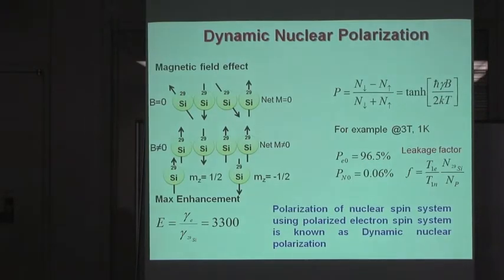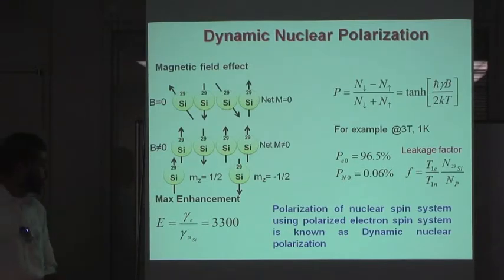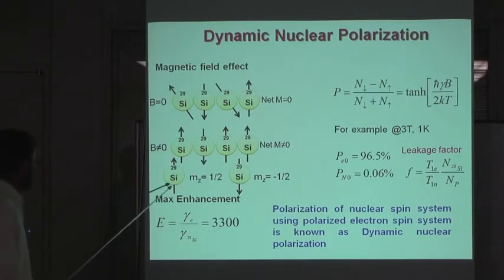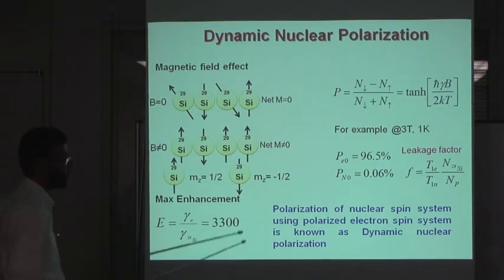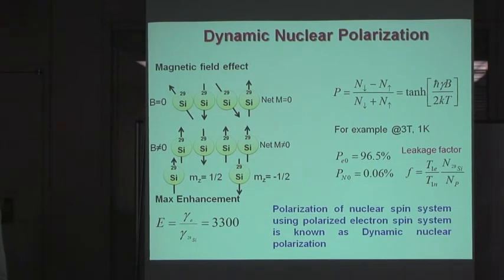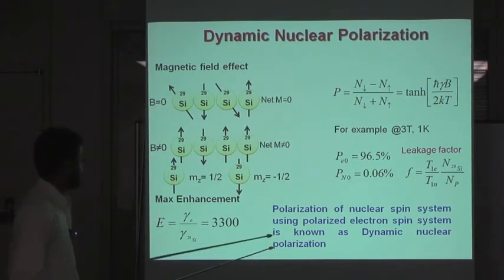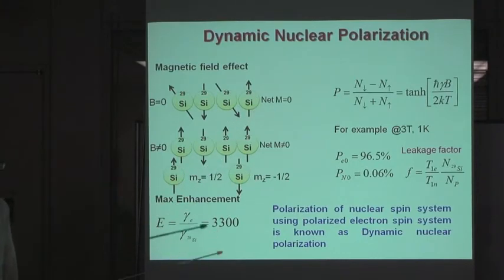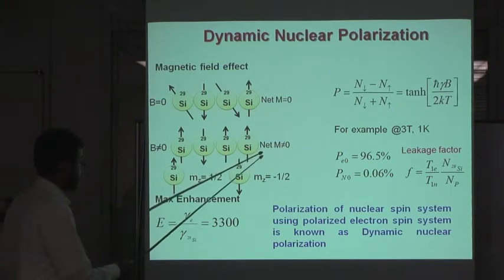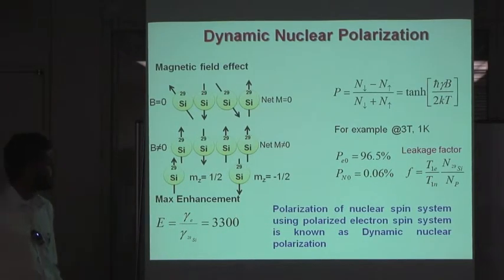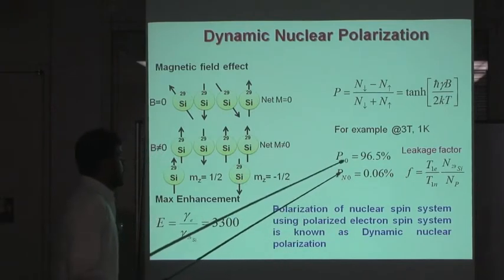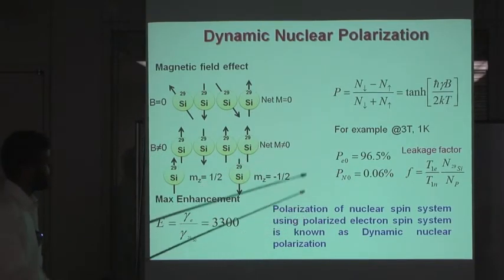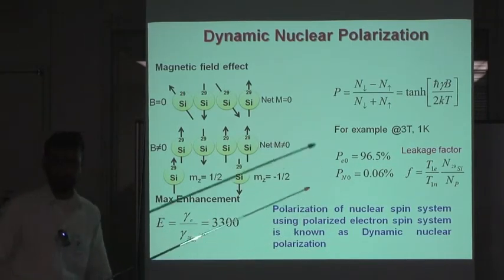Dynamic nuclear polarization. Silicon has three isotopes: 28, 29, and 30. Only 29 has nuclear spin. The 29 silicon up nuclear spin represents the magnetic quantum number plus half and down spin represents minus half. In bulk silicon, when there is no magnetic field, no net magnetization exists. But in the presence of a magnetic field, net magnetization exists. Polarization is defined by a simple mathematical equation: total number of down nuclear spin minus total number of up nuclear spin, divided by total number of nuclear spins.